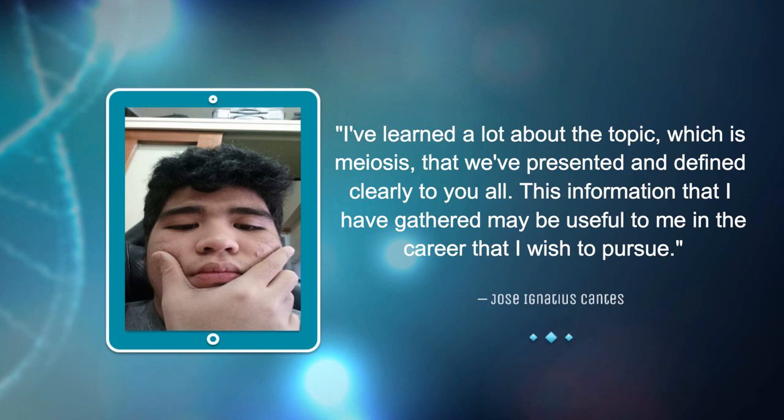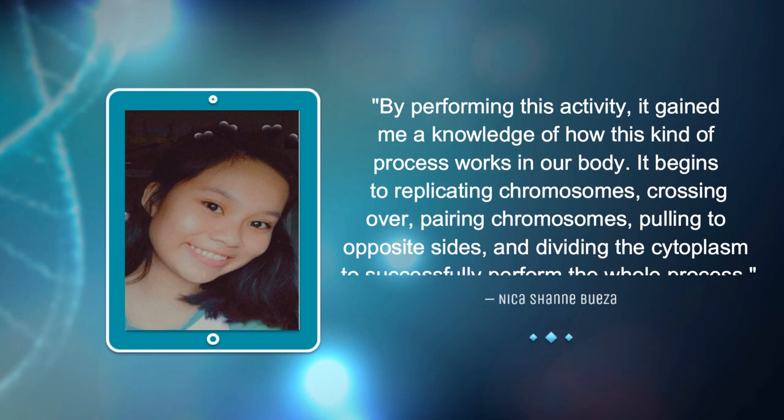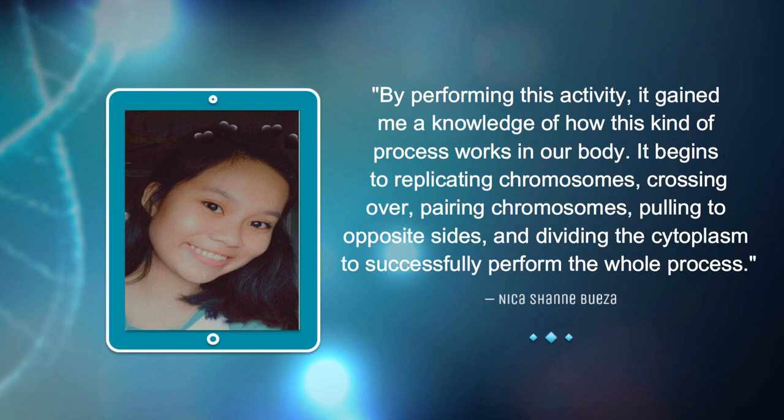I learned a lot about meiosis that we presented and defined clearly, and this information may be useful to me in the career I wish to pursue. Cell division is important in our body, responsible for growth, development, and repair of damaged tissues and organs. Meiosis has a doubled stage of dividing: Prophase I, Metaphase I, Anaphase I, Telophase I, Prophase II, Metaphase II, Anaphase II, and Telophase II — each with a particular job. By performing this activity, we can understand how meiosis works, beginning with chromosome replication, crossing over, chromosome alignment, pulling to opposite sides, and dividing the cytoplasm.